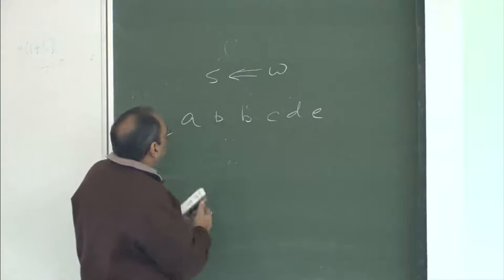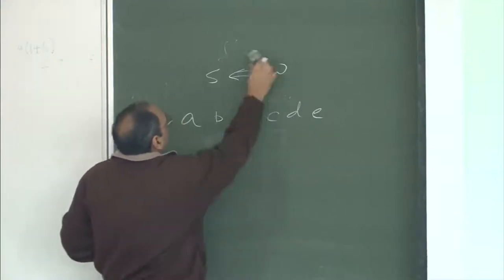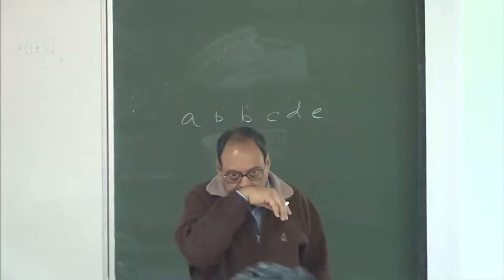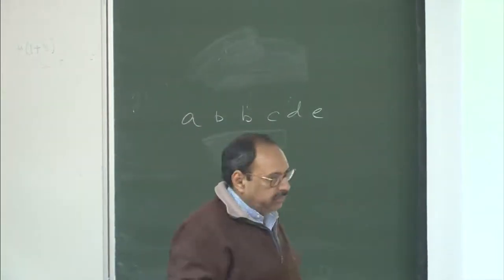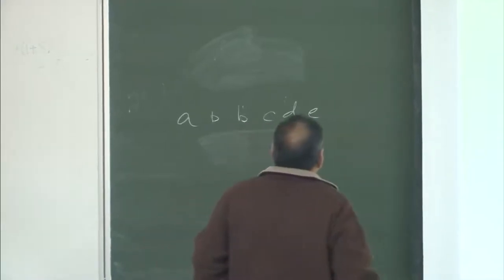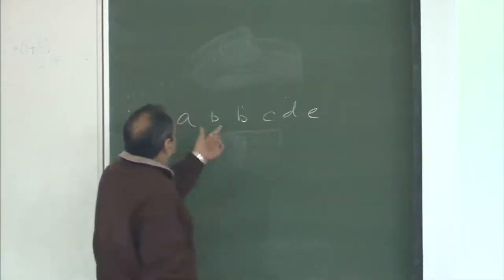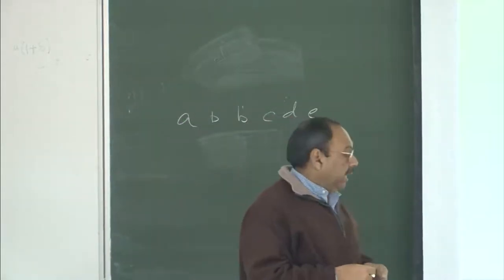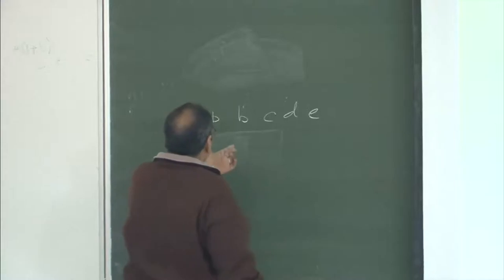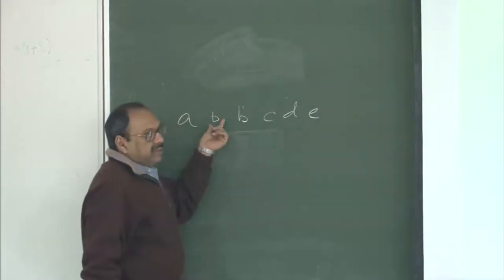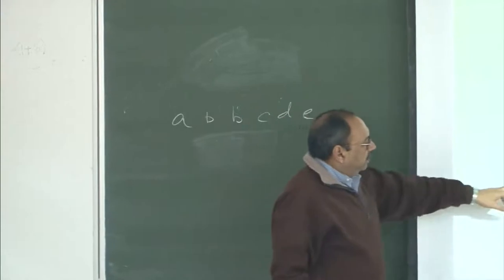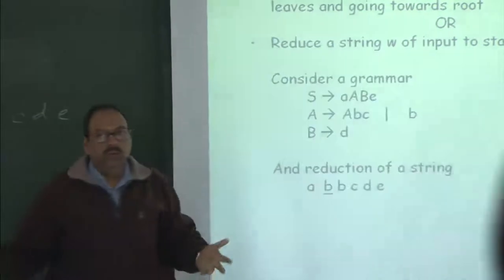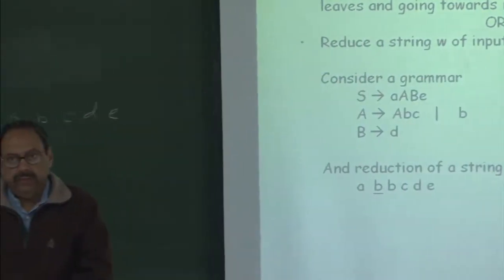What we want to do is we want to reduce the string to the start symbol. We will try to find a substring which matches the right-hand side of a production, and if it matches, we replace it by its left-hand side and continue. The hope is that if this is a valid string, we should be able to reduce the whole thing eventually to S.